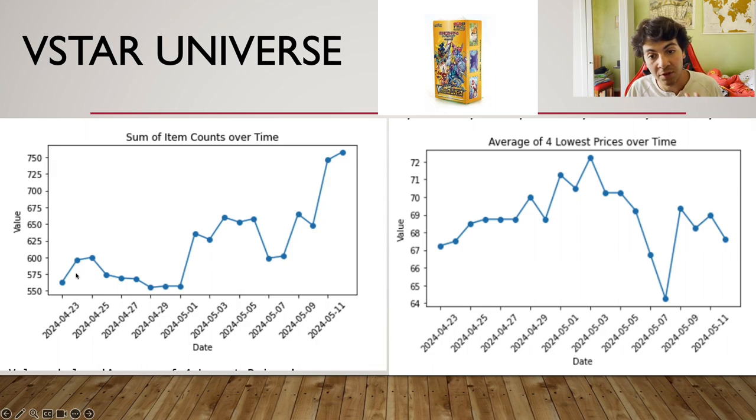But here we have the same story. Now in terms of absolute values, we have less number of boxes have been dumped into the market from roughly 550 to 750 against 200 and 1000. But they've both been increasing. And also obviously, in terms of percentage wise, the number of boxes for 151 five X, whereas here we basically have roughly a 50% increase in terms of supply.